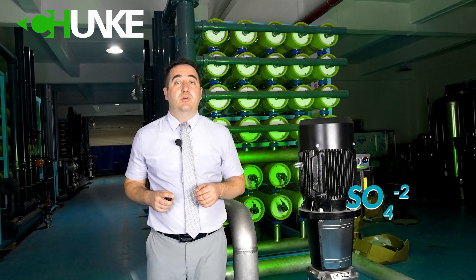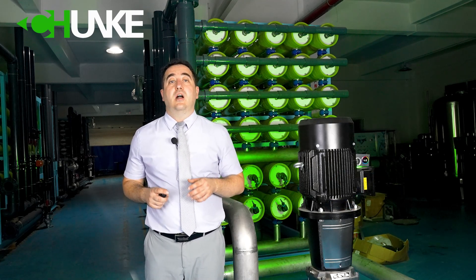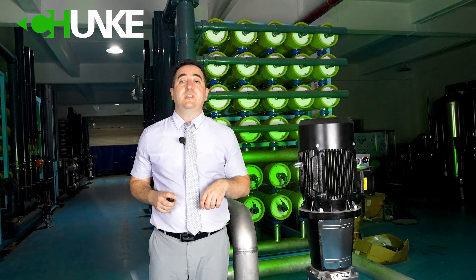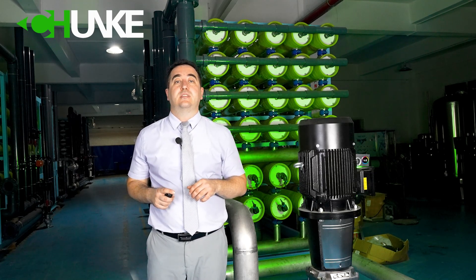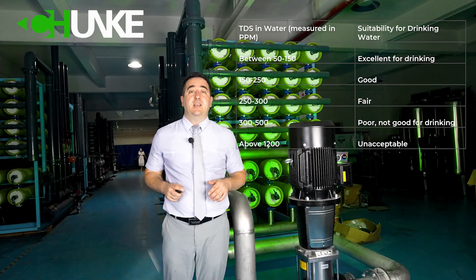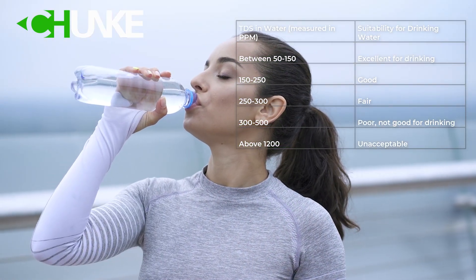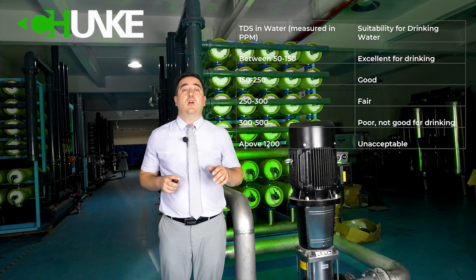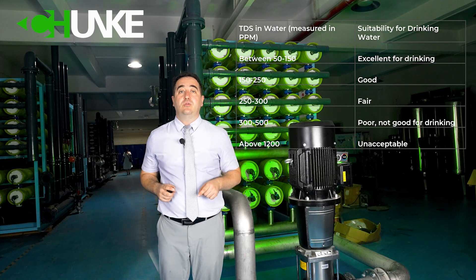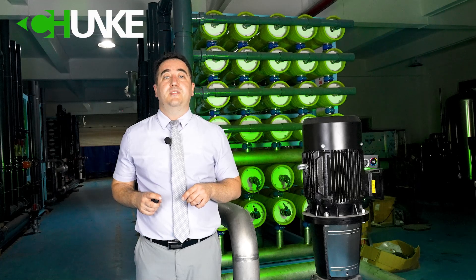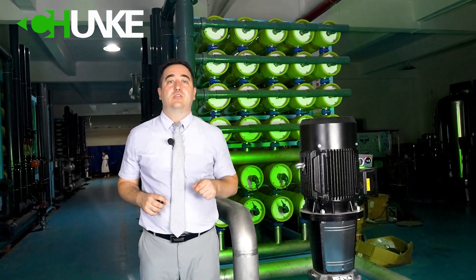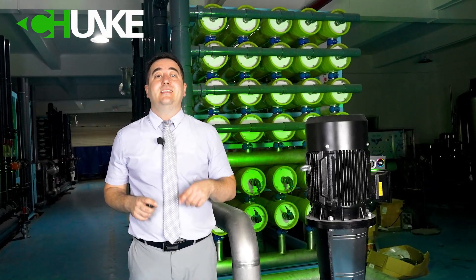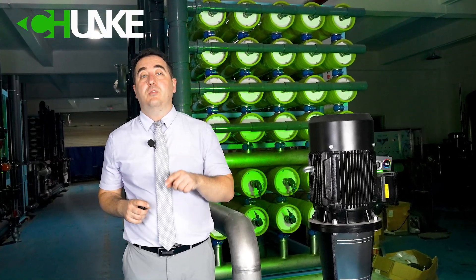Why is TDS important? We categorize water according to its TDS level. Now I will show you two tables — from these tables you will see this categorization. For drinking purposes, if you want to drink water, TDS level must be less than 250 ppm. If you are producing bottled water, we suggest you produce water less than 150 ppm. Also, if you want to use this water in your process, you have to define the needed treated water TDS level for your process.